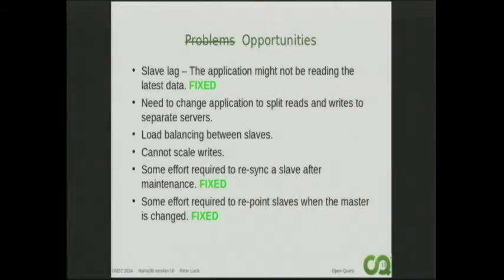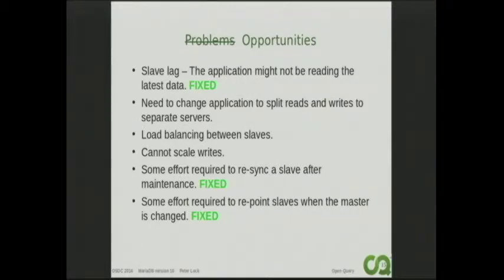Reviewing the checklist: slave lag is pretty much fixed with parallel replication. We still have to change the application to split reads and writes, and load balancing between slaves is still the same issue. Cannot scale writes — same issue. Resyncing a slave after maintenance is similar, though global transaction IDs make it a little bit easier. The repointing problem is fixed with multi-source replication — you don't really have to do any repointing or resyncing with that new setup.